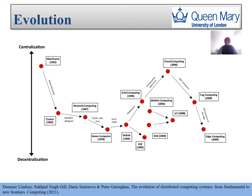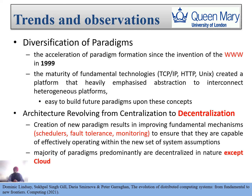In this slide, we have two different types of paradigms: centralization and decentralization. It can be clearly seen how distributed computing started as decentralized — with mainframe — and then shifted toward decentralization. Cloud computing is very famous and is essentially a centralized system, but new paradigms like fog computing are moving toward decentralization, and the latest paradigm, edge computing, is also decentralized.